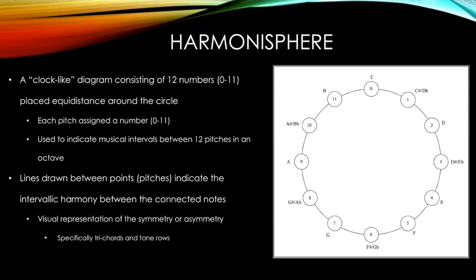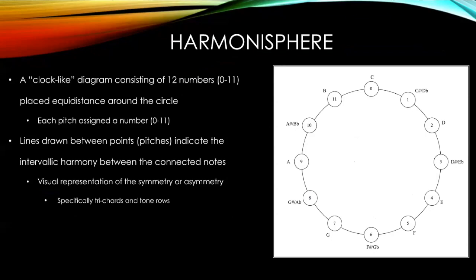In order to create my geometric interpretation, I also had to utilize a harmonosphere. A harmonosphere is a clock-like diagram consisting of 12 numbers, 0 through 11, placed equidistant around a circle. Each pitch is assigned a number 0 through 11, and lines drawn between points indicate the intervallic harmony between the two connected nodes. For instance, if you drew a line from C to D, or from 0 to 2, you could calculate the intervallic distance between those two notes as being two half steps. Therefore, harmonospheres serve as a fantastic visual representation of the symmetry or asymmetry that occurs in tone rows or chords, and I used them to indicate the symmetry found in the trichords and tone rows of Webern's Concerto for Nine Instruments.